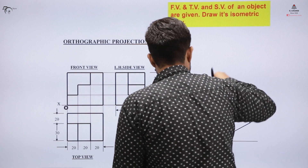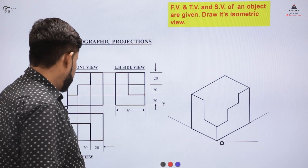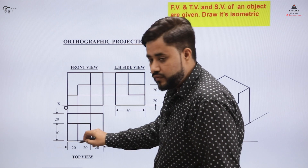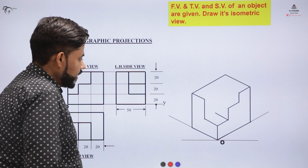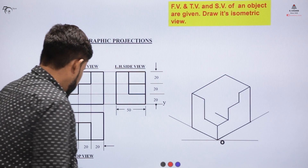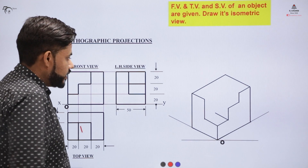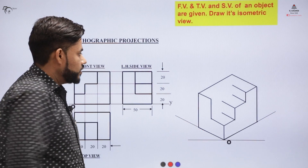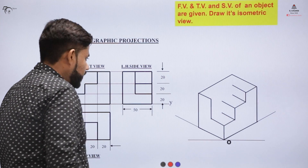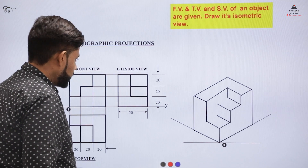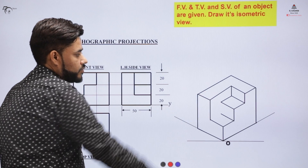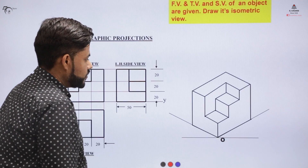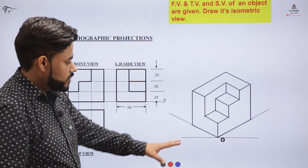This is the top view — watching the object from the top gives this view. The gaps, these 30-unit parts, are to be constructed. These lengths are 30 and the corresponding height is 20. You create lengths of 30 from each corner, since this indicates 30 everywhere — placing 30 on each and every corner. From each corner, drop down the height to a distance of 20, then join them to maintain uniformity. This distance is also 20, joined accordingly, making this a 3D object.